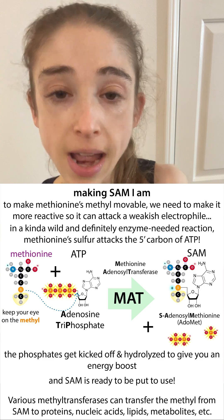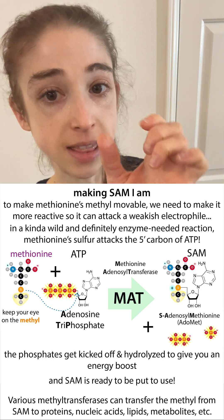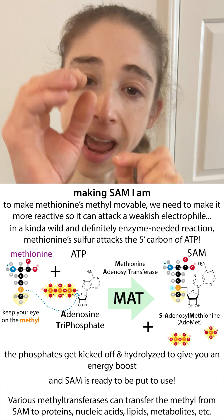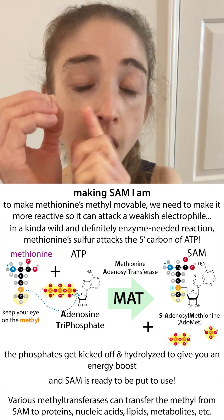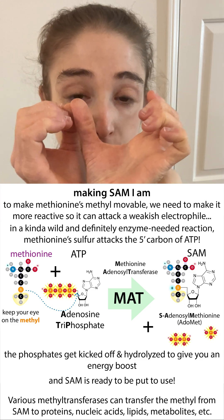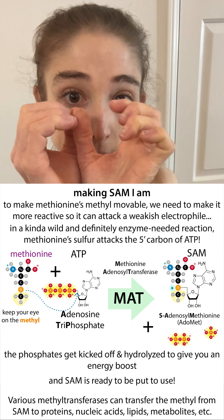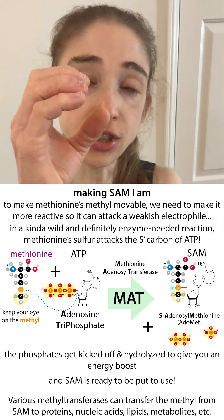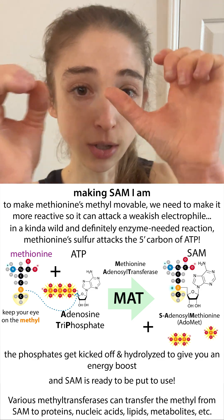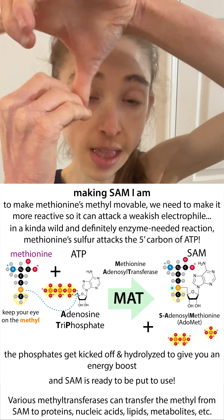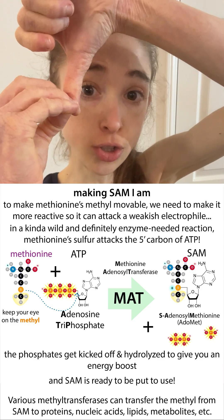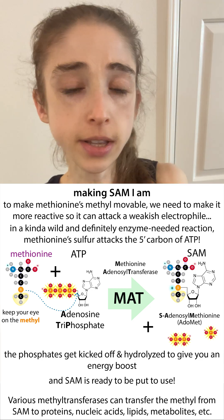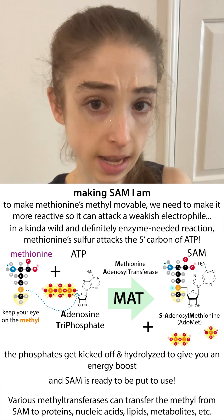The way we're going to do this is a really cool reaction where the sulfur of methionine actually attacks the connection point of an ATP molecule to the phosphate groups. Typically we see ATP being used to transfer phosphate groups, but here we're actually attaching the adenosine part onto the methionine through the sulfur. That gives the sulfur a positive charge, which can be relieved if you pop off the methyl group. So you get this molecule of S-adenosylmethionine, or SAM.